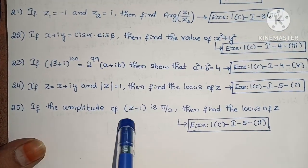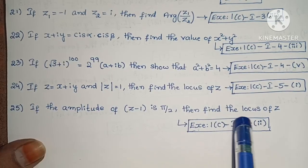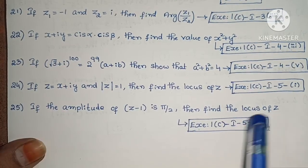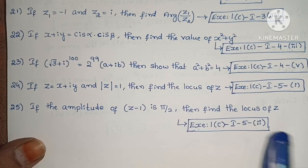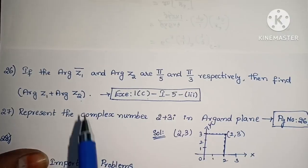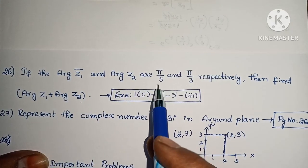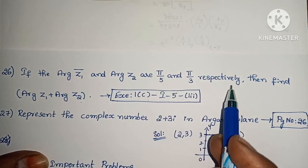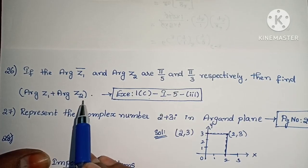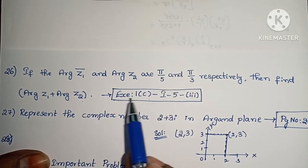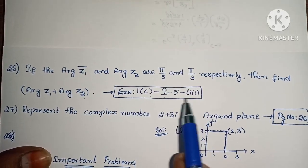Next, if the amplitude of z minus 1 is pi by 2, then find the locus of z. Exercise 1c, first roman, fifth, second one. Next, if arg(z1 bar) and arg(z2) are pi/5 and pi/3 respectively, then find arg(z1) plus arg(z2). Exercise 1c, first roman, fifth, third one.